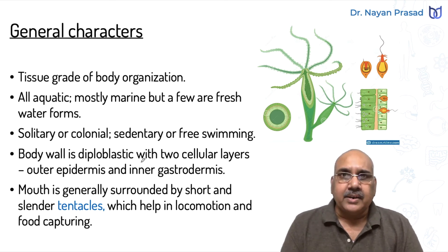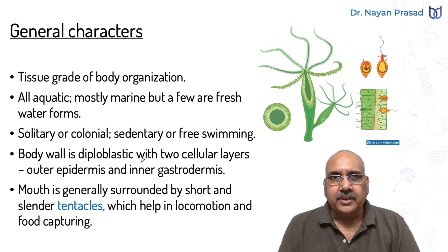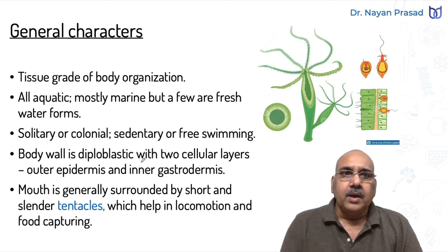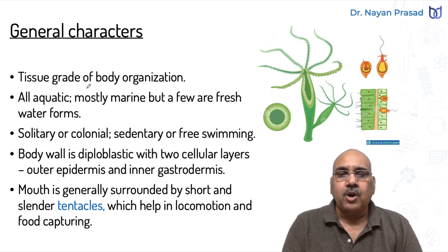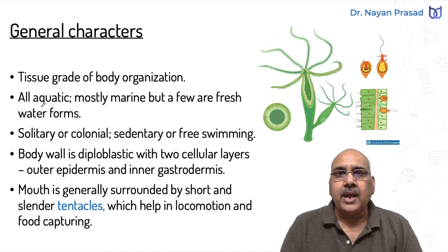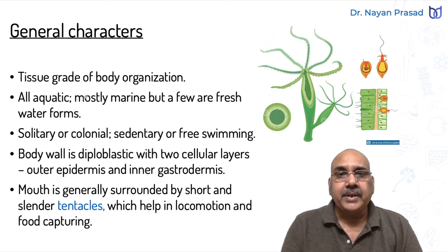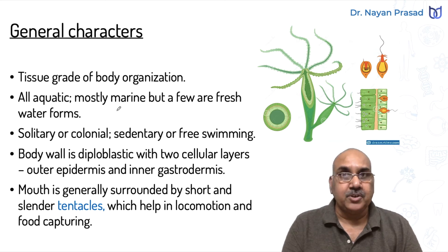Discussing general characters includes body organization, habit, habitat, and general life activities. The members of Phylum Coelentrata have tissue grade of body organization — the first group having tissues among multicellular animals. These are all aquatic, found in water, mostly marine in seawater, but a few are freshwater species also. Hydra is freshwater, but jellyfish is marine.